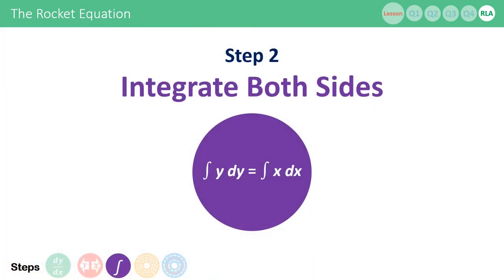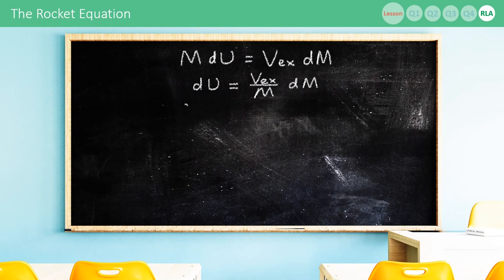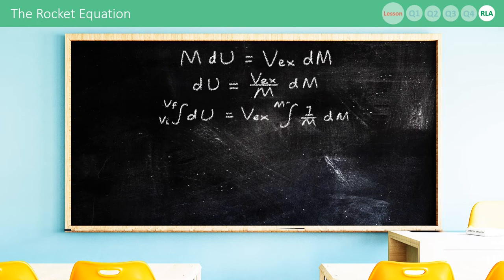In step 2, we then integrate both sides. The left side, we can integrate between the ship's final and initial velocity, and on the right, we remove the constant vex, and we integrate 1 over m between the ship's final mass and its initial mass. This gives us vf minus vi equals vex times ln mf minus ln mi.